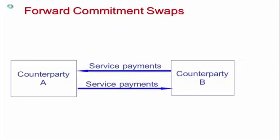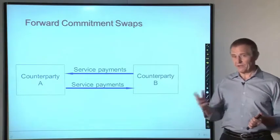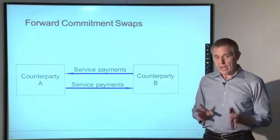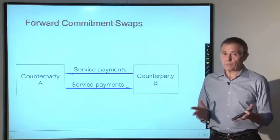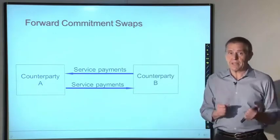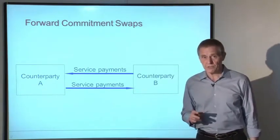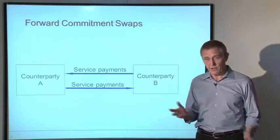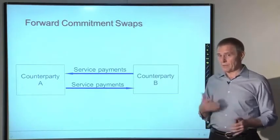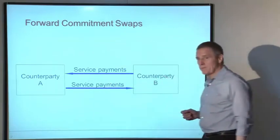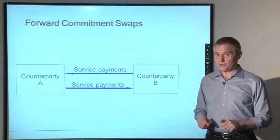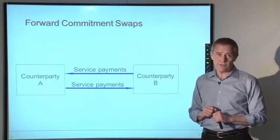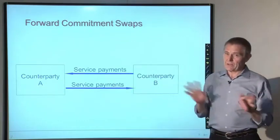Here you see an example of a generic forward commitment swap, which applies to any of the swaps mentioned — not just interest rate swaps but also commodity, currency, and equity swaps. In these contracts, the two counterparties — typically a swap dealer and a client, which might be an institutional investor, a government agency, or a corporation using the swap for risk management — agree to exchange something. In the most basic interest rate swap, one party commits to pay a floating rate and the counterparty commits to pay a fixed rate.